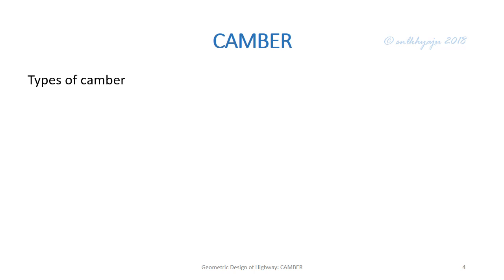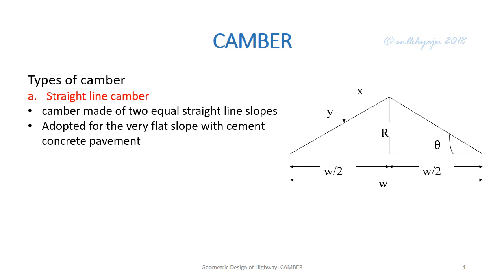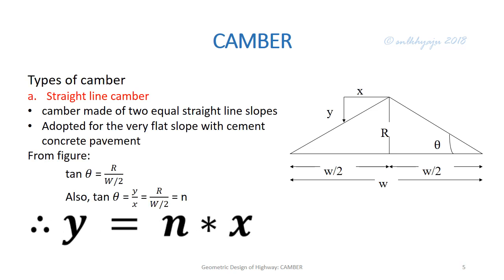There are three types of camber. The first is straight line camber, where the pavement surface is straight and the slope is uniform. This is adapted for very flat slopes with cement concrete pavement. From the figure, tan θ equals the riser r divided by the base w/2, and similarly tan θ equals y/x. Equating these, we get y = nx, where y is the vertical drop from the crown of the pavement at a horizontal distance x from the crown.